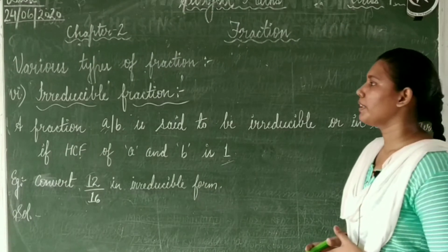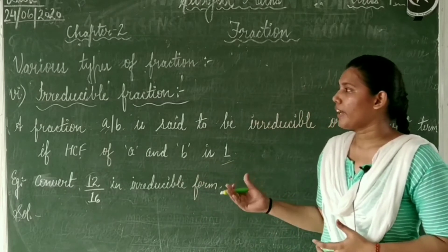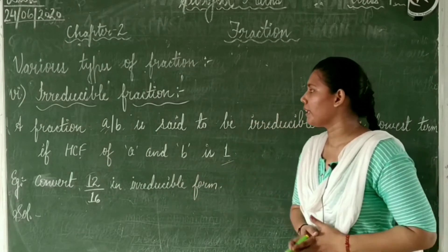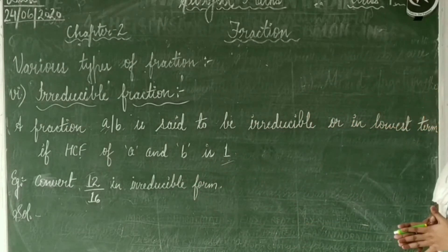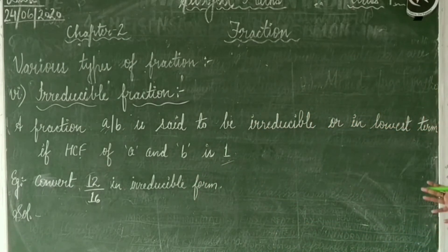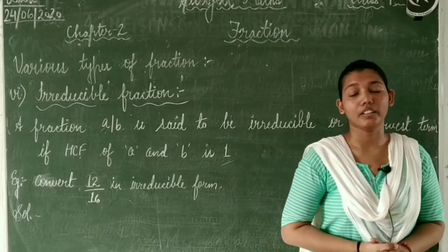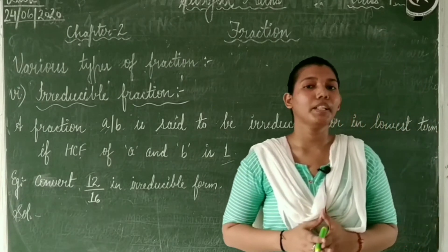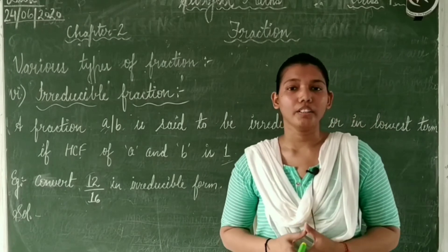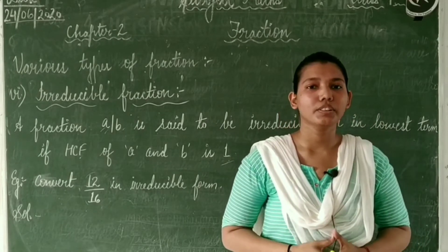Irreducible fraction: a fraction A by B is said to be irreducible or in lowest terms if the HCF of A and B is 1. If the HCF of A and B is not 1, then it is called a reducible fraction.